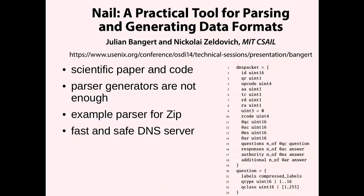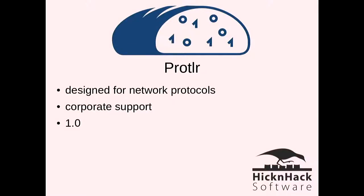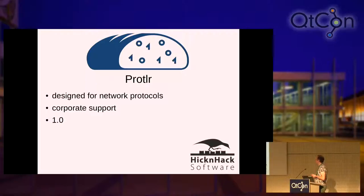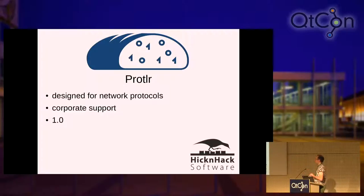Another, more recent approach: some researchers wrote a scientific paper and published code using a specification format, showing you can have a parser for zip files, and they also implemented a fast and safe DNS server by writing down the DNS packet specification in this form. A nice paper and project, though it was academic. A more commercially interesting approach was presented at this conference by Hick and Hack Software — a lightning talk. They have version one of something called Prodler, intended for network protocols, not file formats, but in principle it should be amendable to something like that as well. Andreas, who is sitting here, can answer any questions about how Prodler works.